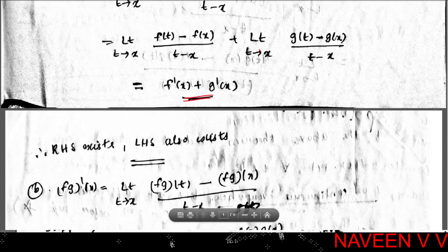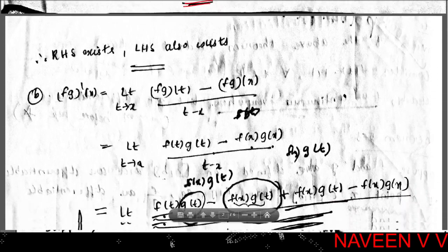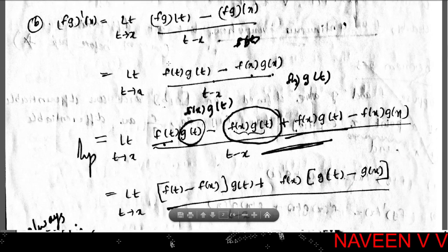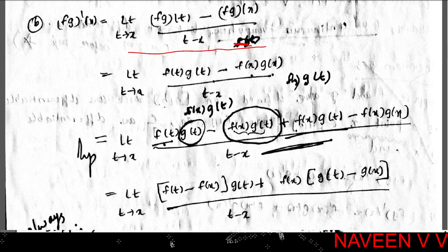Now to show f·g is differentiable at x, we need limit t→x of [(fg)(t) - (fg)(x)] / (t - x) to exist. By definition, (fg)(t) = f(t)·g(t) and (fg)(x) = f(x)·g(x). So this becomes limit t→x of [f(t)·g(t) - f(x)·g(x)] / (t - x).